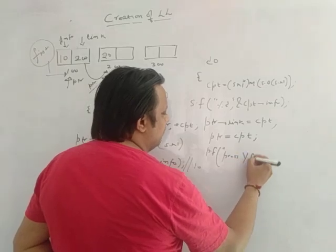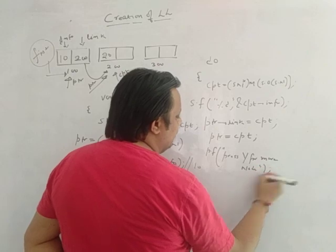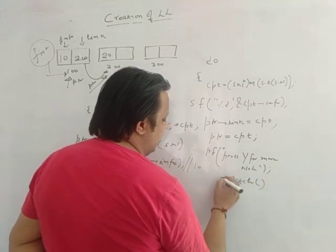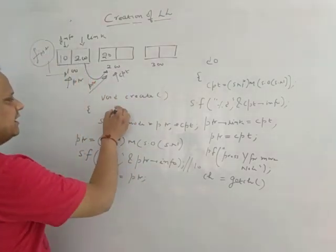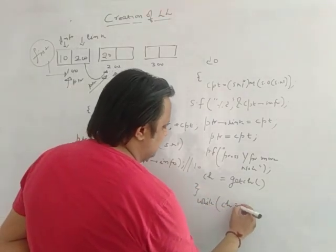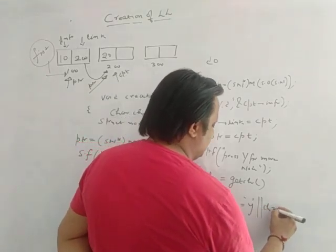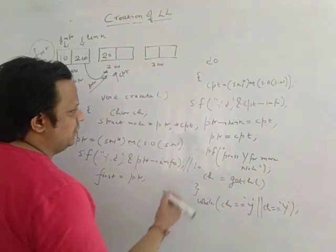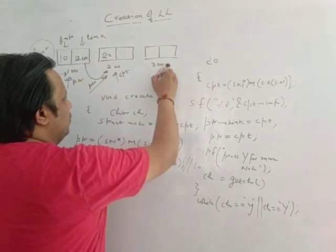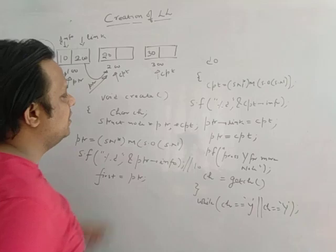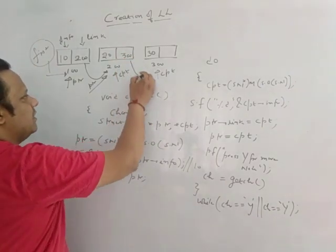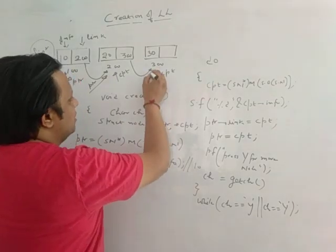Let's suppose after this we write printf("Press y for more nodes") and store the input using getch into a character variable ch. Then I write a do-while loop: while(ch == 'y' || ch == 'Y'). If the user presses y, the loop executes again — a new cpt node is created, the info part 30 is inserted. Since ptr is now pointing to 200, ptr->link = cpt inserts 300 and links this node. Then ptr moves to 300.